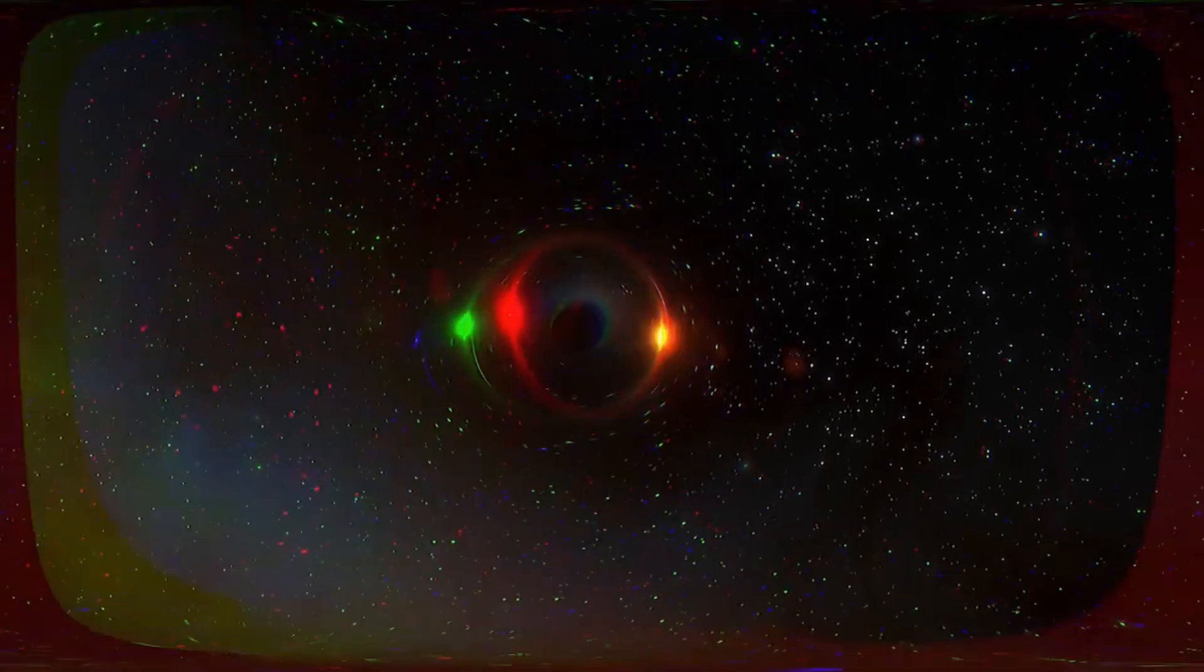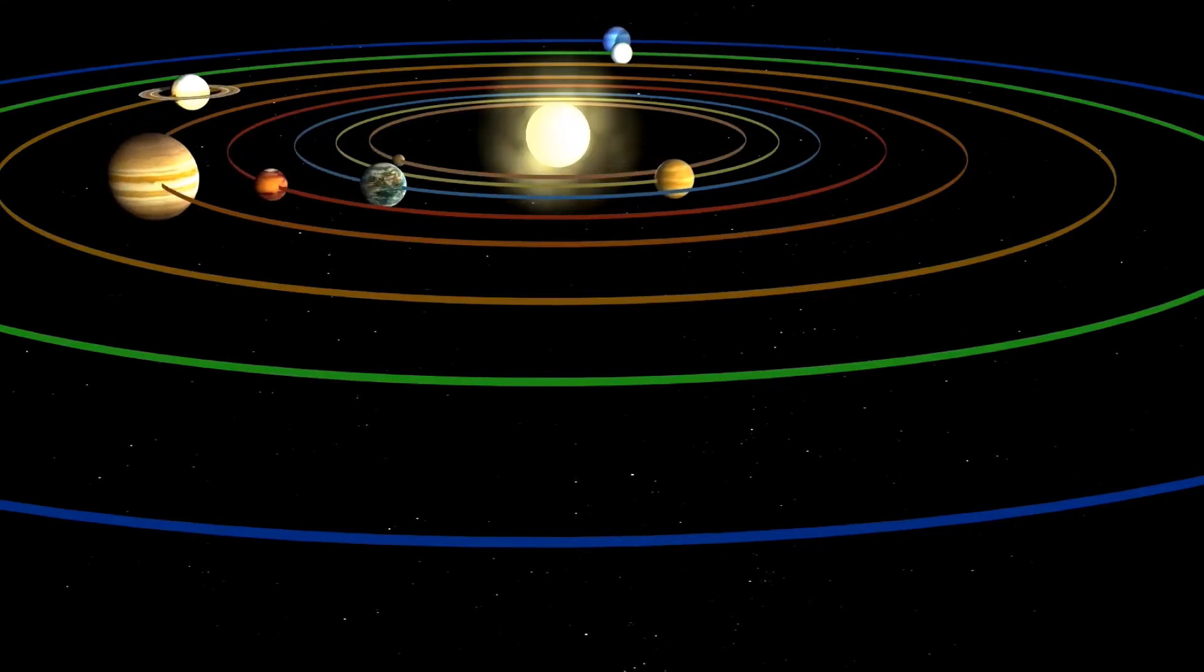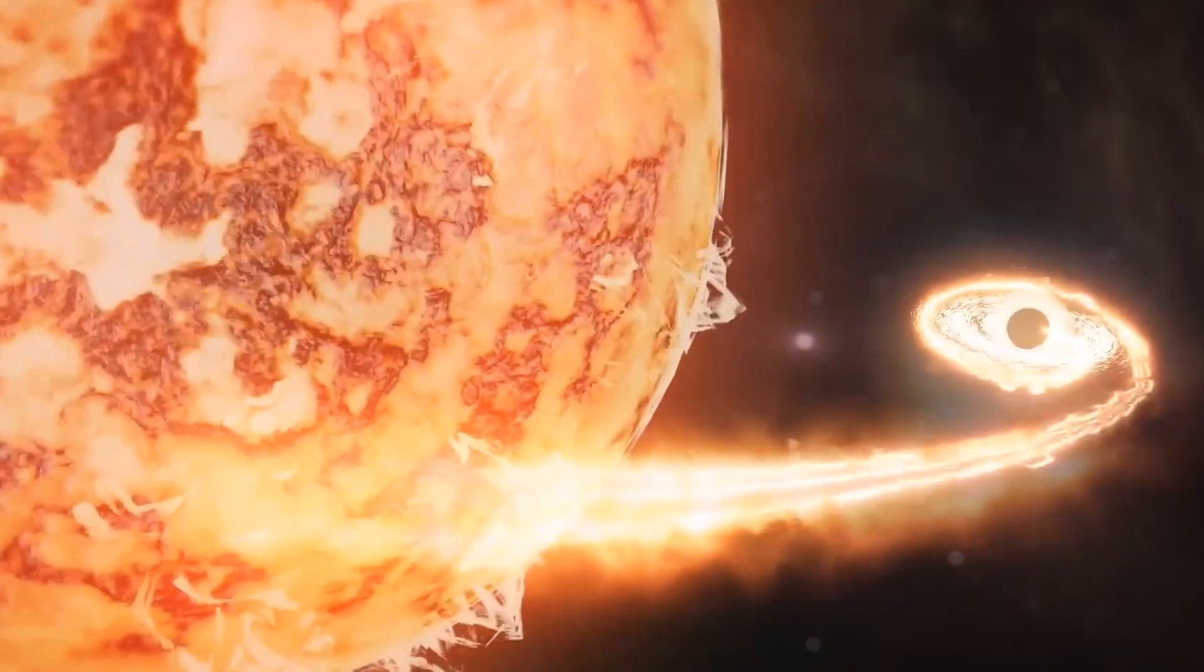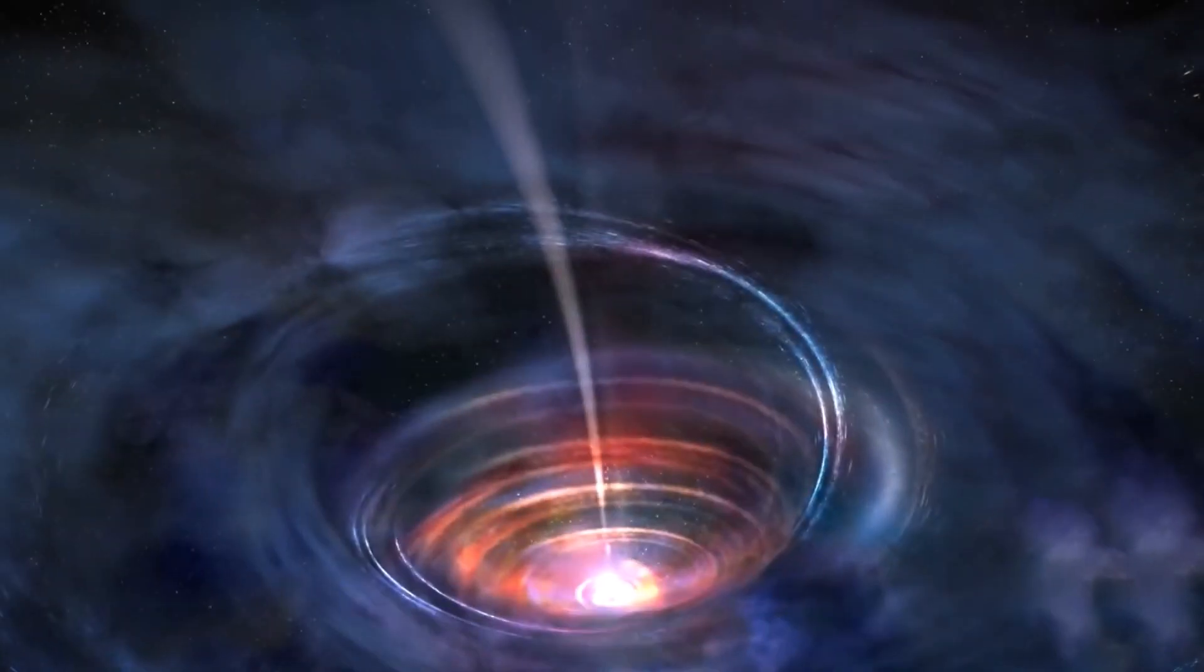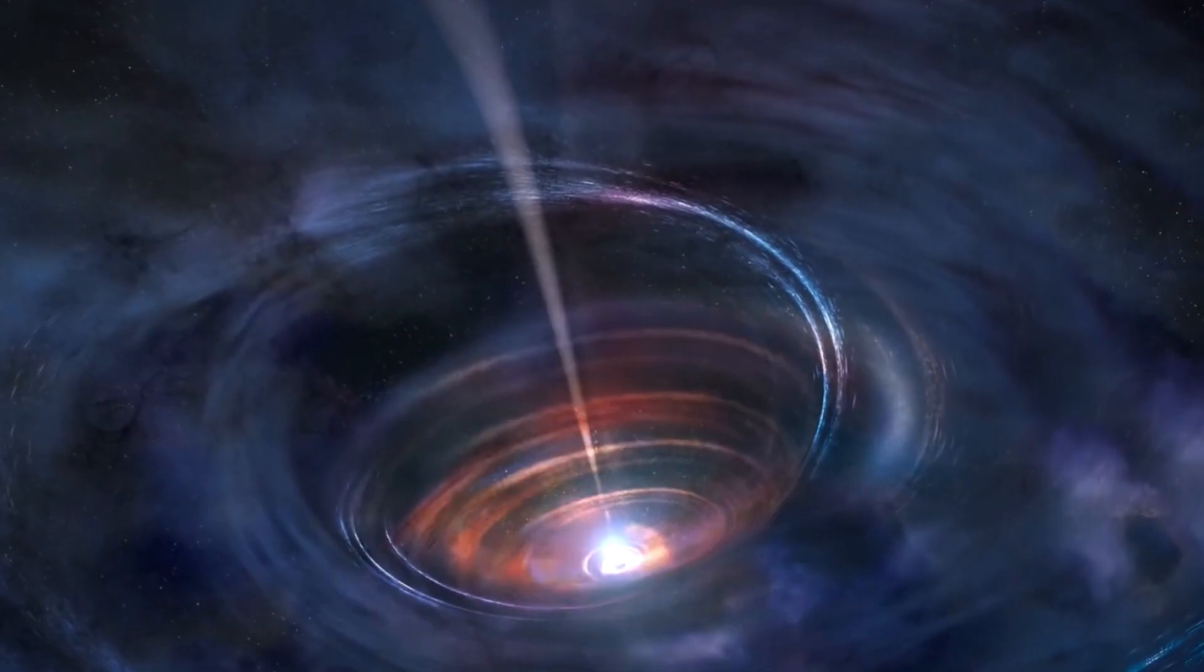Rather, it would continue to orbit around the black hole, as it currently does with the sun. When an object or matter approaches a black hole, it falls into the black hole the same way it would under gravity on Earth.